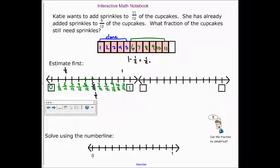So, she has about half to go. And, half of twelve would be... She's got about six-twelfths to go. Well, let's solve it using the number line.